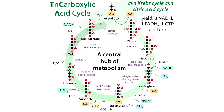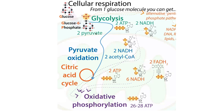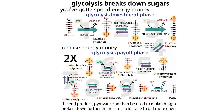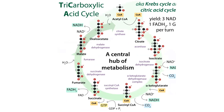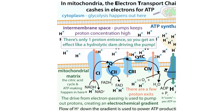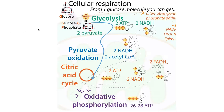Metabolism is often presented as a neat little pathway where you take glucose, go through glycolysis, break it down into pyruvate, take that through the citric acid cycle, then through the electron transport chain, and boom, you've got a bunch of ATP. But what I'm going to try to convince you today is that things are a lot more complicated than that, but they make a lot of sense.